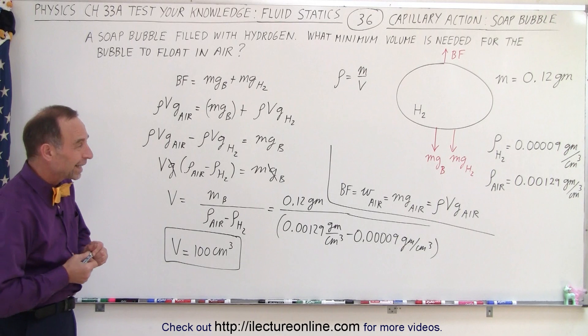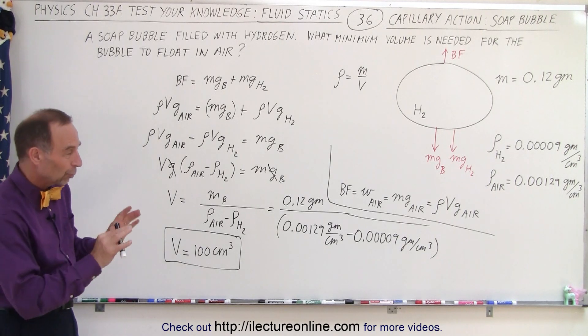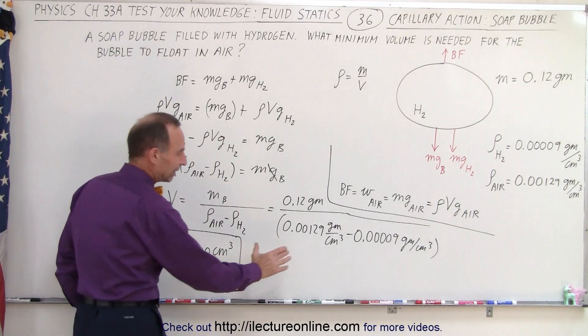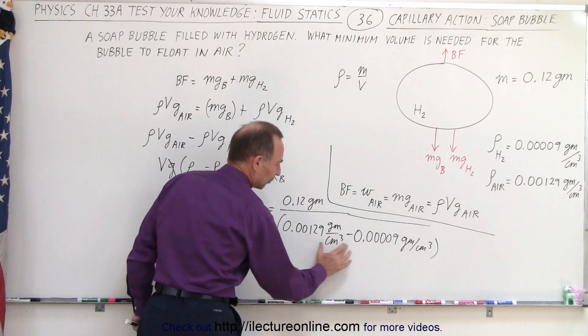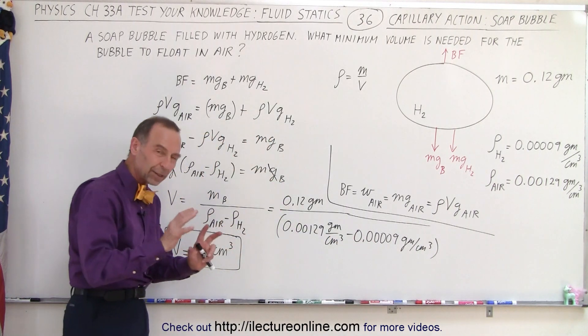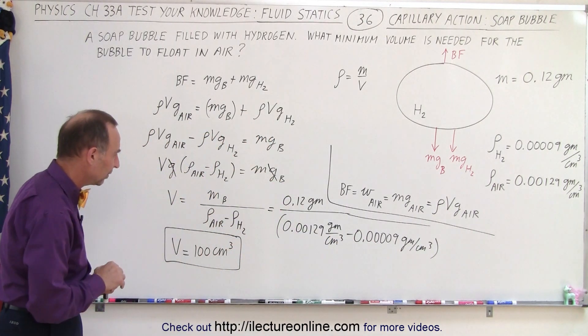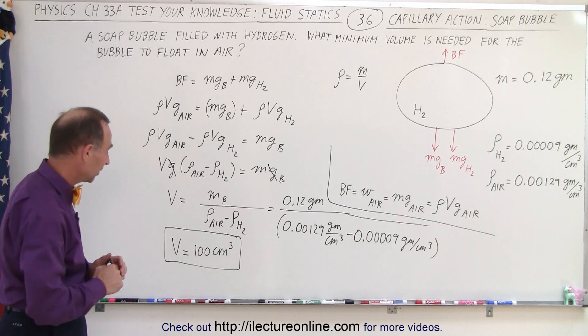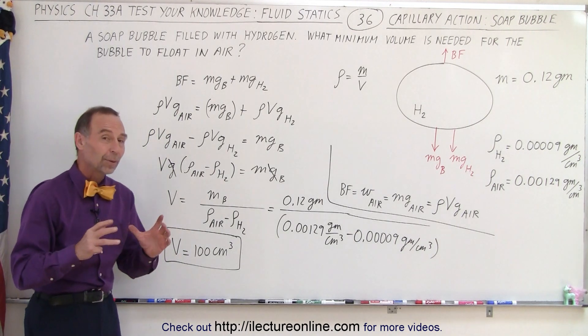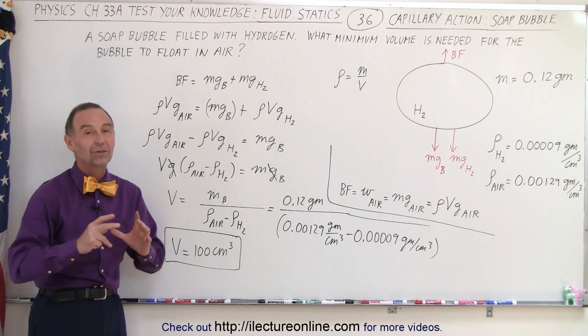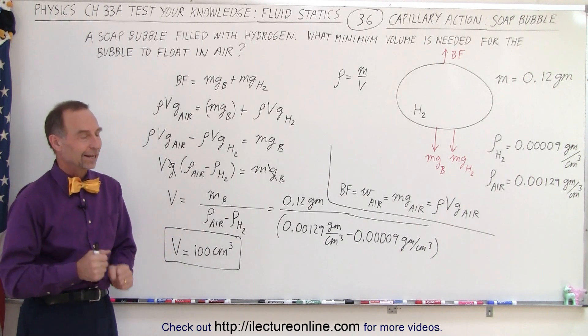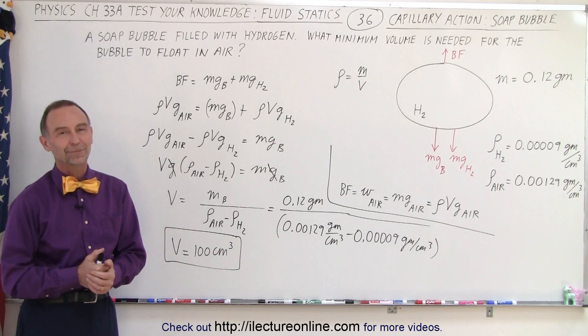And when you're not sure, when you get an answer you're not sure about, you can quickly do a rough order of estimation. I was quickly checking the densities of air versus hydrogen, and it looked like it was about the right ratio. And so yes, I did punch in the wrong button on the calculator, but this is now the correct answer. The soap bubble would have to be 100 cubic centimeters for it to be able to float in air. And that is how that's done.